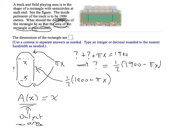We can see that the width of the rectangle is X, and the dimension this way for the rectangle is this one half times 1900 minus pi X thing that we just found. So A of X equals X times one half times 1900 minus pi X.